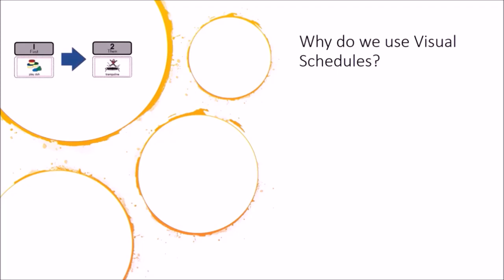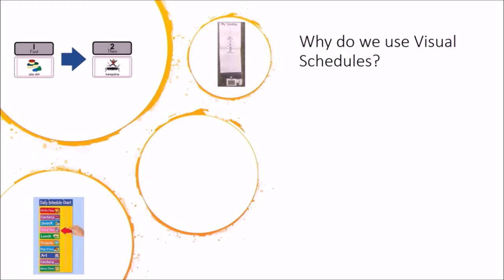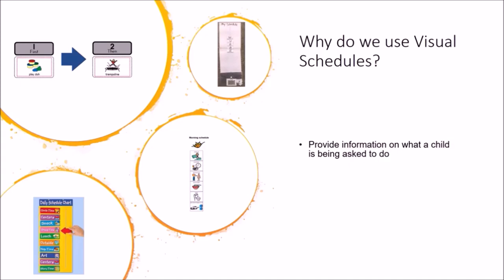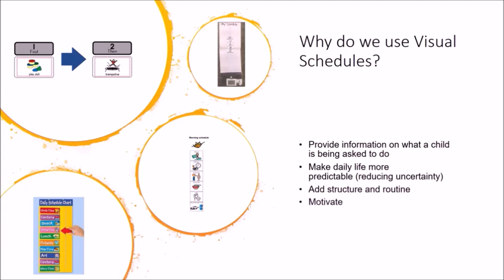So why use visual schedules? Visual schedules can be a really important visual support in a child or young person's environment. We heard earlier how visual supports in general can help orient a child, help them know the plan and make life more predictable. Visual schedules can provide information on what a child is being asked to do, help a child know the plan, make daily life more predictable, reduce stress and uncertainty, add structure and routine, and they can motivate. Watch the following video to get some ideas on how you can make a visual schedule and implement it.